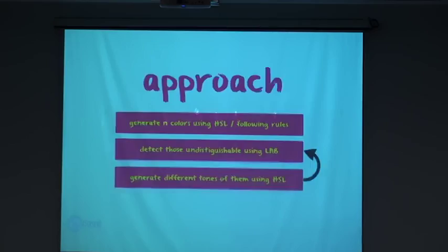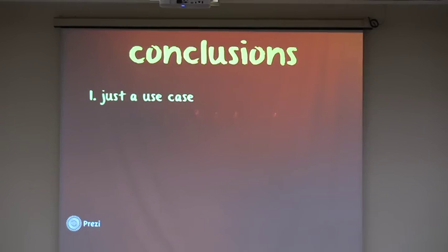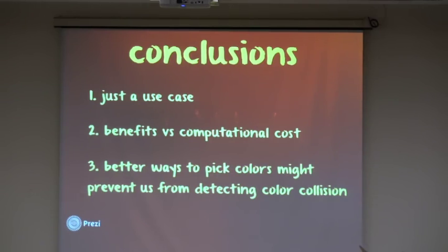So the conclusions: this is just the case. I was talking to Juan, discussing some of these things, and we implemented this to handle the collision. But the thing is that we need to figure out what are the real benefits of using this model in particular, computational cost, because conversions are not so trivial. So probably it's not a good idea. And finally, if we think in better ways of picking colors, probably using better algorithms in HSL or HSB, we probably have not the problem of collision. I think this is it. If you have any questions...